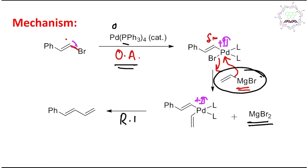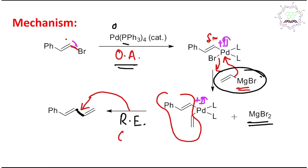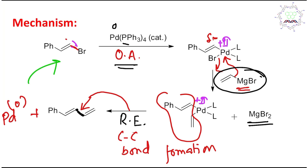The third step is called reductive elimination. The two carbon groups coupled together, each contributing one electron to form a new bond. Palladium takes back its two electrons and is reduced to Pd(0). A C–C bond is formed — this is actually a carbon–carbon bond formation reaction, which is very important. Palladium returns to its zero oxidation state, and catalysis continues, which is why only a catalytic amount of Pd(PPh₃)₄ is needed.